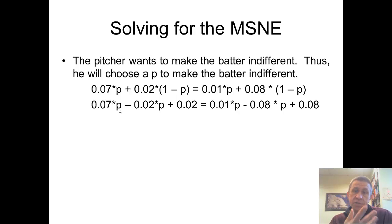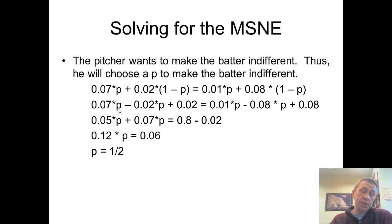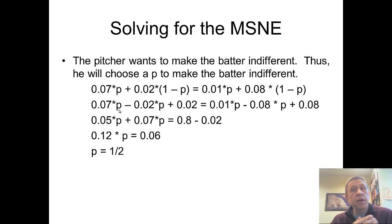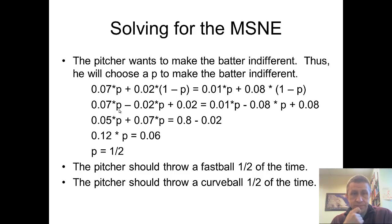If you go through and solve for P, you should probably pause and try to solve on your own right now. If you found that P equals one-half, you got the right answer. P is the probability the pitcher throws a fastball. So for the pitcher to make the hitter indifferent, the pitcher should throw a fastball half the time and a curveball half the time. That is the only percentage of fastballs versus curveballs that's going to make the hitter indifferent in this case.